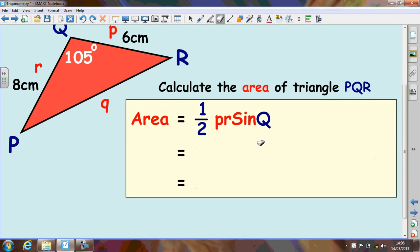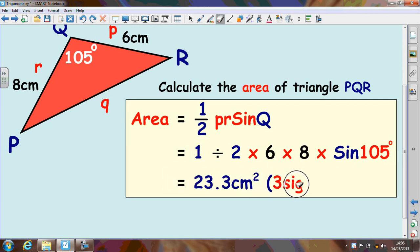Now there are a number of ways of putting a half into your calculator. You can do 0.5 times. I usually do 1 divided by 2. Just type that into your calculator like this. Times by P which is 6. Times by R which is 8. And just times sine 105. If you type all that into your calculator you'll get the correct answer. I've just rounded it to three significant figures.